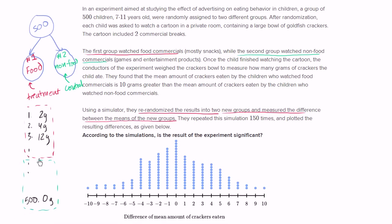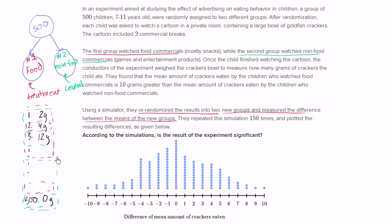What they're doing now is taking these same results and re-randomizing them — completely mixing up all of the results. It's completely random now whether the student had watched the food commercial or the non-food commercial. Then they measure the mean of the new group one and new group two, and look at the distribution of the differences in means. When they randomly put these results into two new buckets, there are many cases where you get no difference in the mean at all.